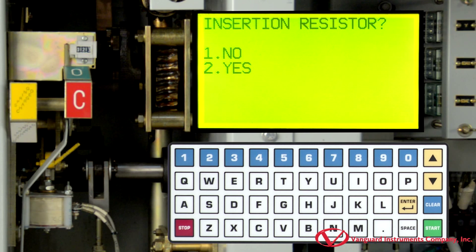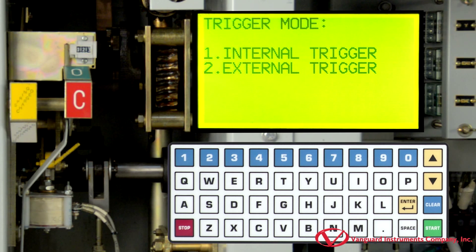On this screen, we are going to select whether there is an insertion resistor or not. For this example, we will press 1 for no. Now, we will select the trigger mode by pressing 1 for internal trigger.